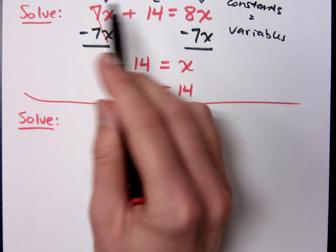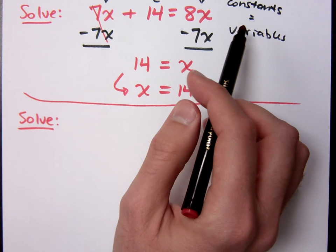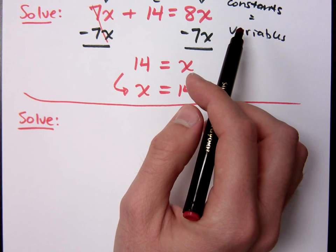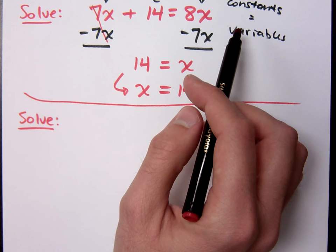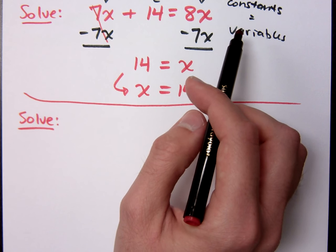Because what you're saying is that you move the 8x over, you move the 14 over, that's two steps, and you still have to get rid of the negative in front of your x. But isn't that how you would go about doing that? That is a way of going about doing it.